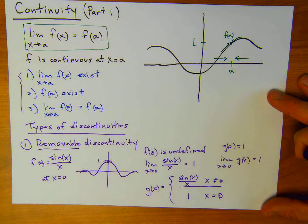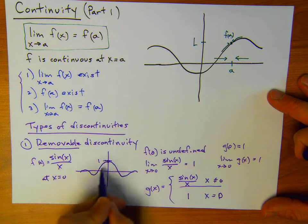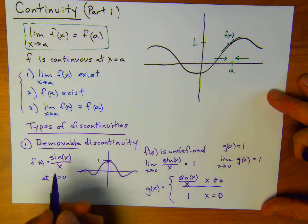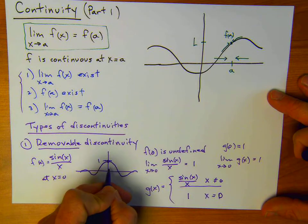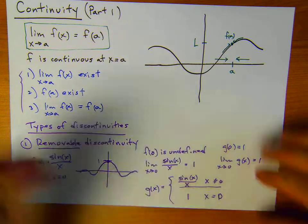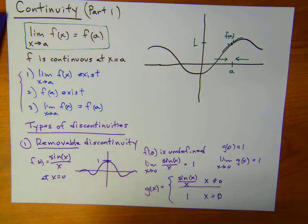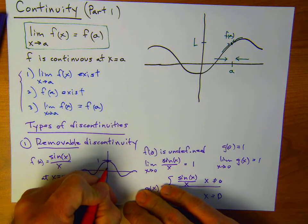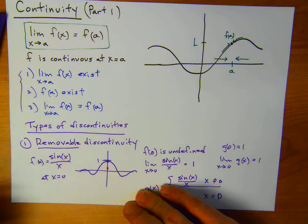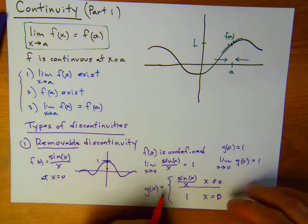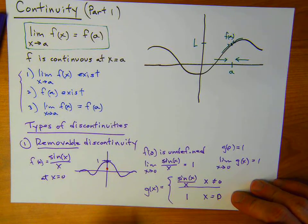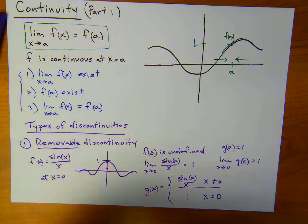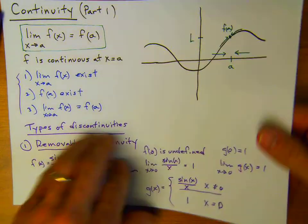G of zero would be one and the limit as x approaches zero of g of x — well, everywhere else it's sine of x over x, so we already know that limit equals one. The function value is one, the limit equals one, so we have continuity. That's what we mean by removable discontinuity: everything looks good, the limit exists, except there's a hole. It might also include a case where instead of a hole the function value is somewhere else — we could still redefine the function so that the limit and the function value agree.